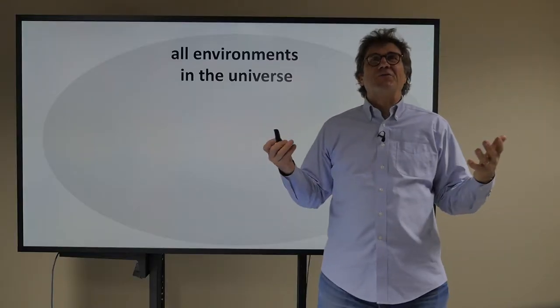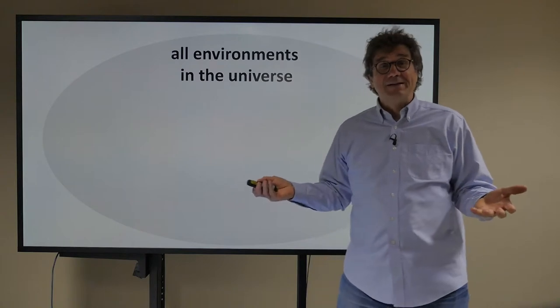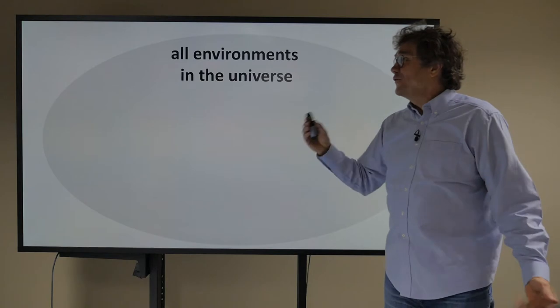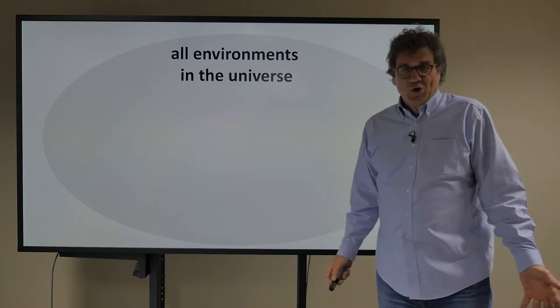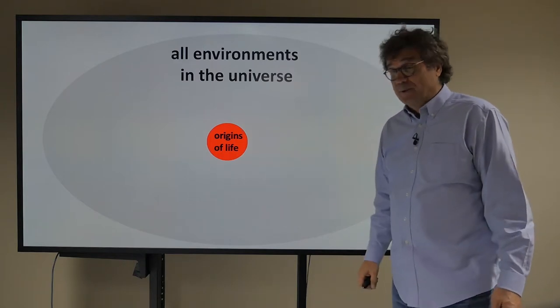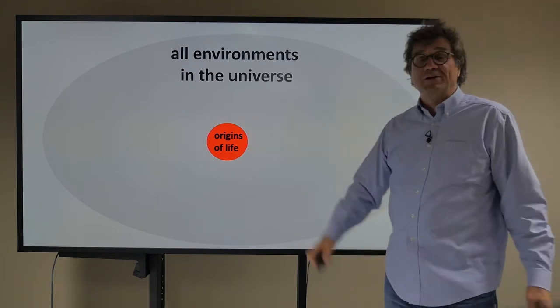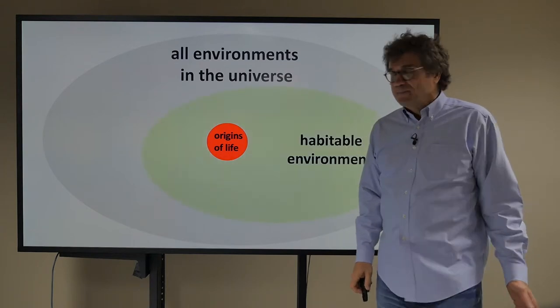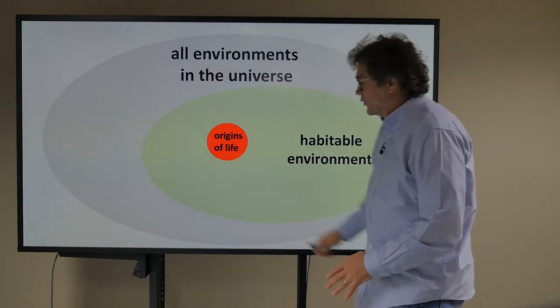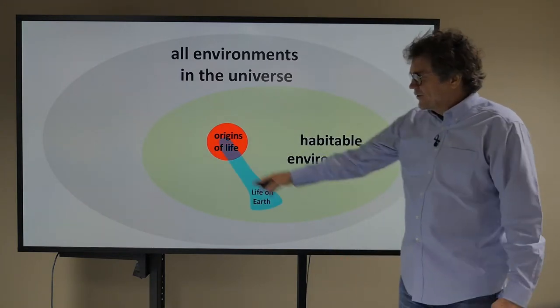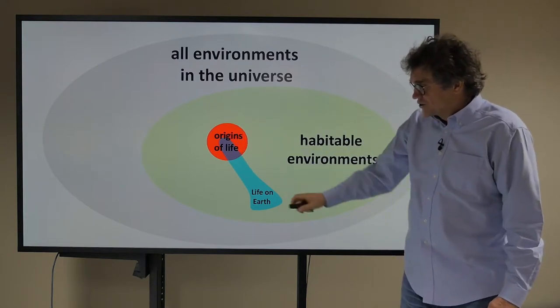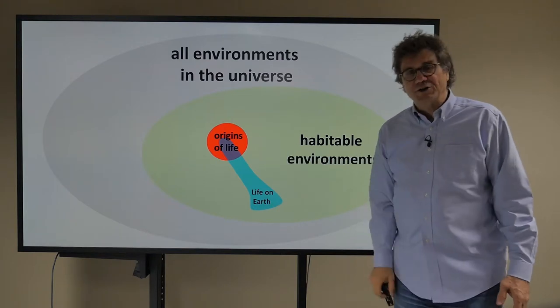So let's talk about the origin of life and the environments in the universe. Let's suppose that this gray oval are all the environments in the universe. And let's suppose that right here are the subsets of those environments, the subset in which the origin of life is possible. And let's make another assumption that habitable environments are this big green oval and that here's life on Earth. So life on Earth started when origins of life and then it evolved into this, all the multiplicity of life four billion years later.